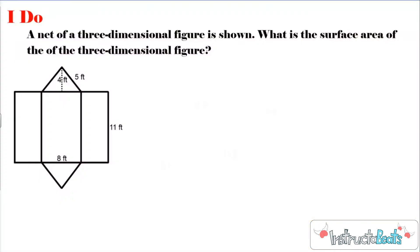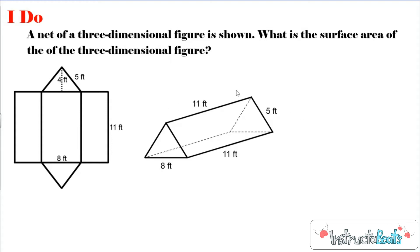Let's get into our I Do problem. It says a net of a 3D figure is shown. What is the surface area of the three-dimensional figure? In other words, if I put this net back together and glued all the edges back together, what would the surface area of that shape be? I think it's important that we can visualize what the 3D shape looks like because it will help us figure it out. This net is a net of a triangular prism.